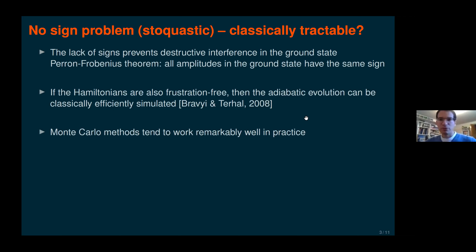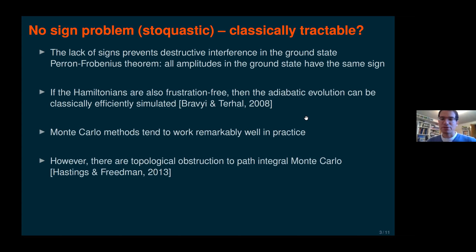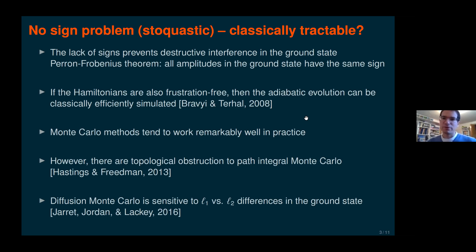From a physics side, systems with no sign problem can be very nicely simulated with Monte Carlo methods. However, there are topological obstructions to path integral Monte Carlo, as shown by Hastings and Freedman. Diffusion Monte Carlo is sensitive to different obstructions — when the ground state has L1 and L2 weights distributed differently. If most L1 weight lies on a different part of the ground state than most L2 weight, diffusion Monte Carlo has difficulty, as shown by Jordan and Lackey in 2016.